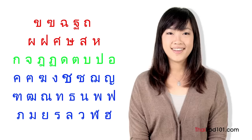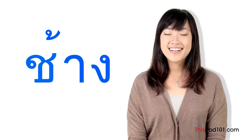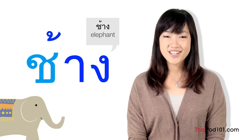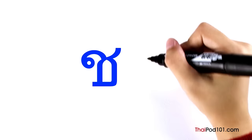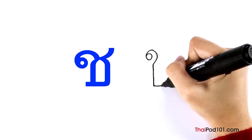The first consonant in this lesson is Cho-chang — chang means elephant. This is a low-class consonant. As the initial sound of a syllable it makes a SH sound. When it's the final sound of a syllable, Cho-chang makes a T stop just like Do-dek, making it a dead syllable. To write Cho-chang: start with a clockwise head, then add a small curve and line going down similar to a question mark, then the line goes to the right and back up. When it gets to the top, add a little tail that sticks out to the upper right.